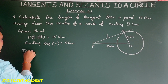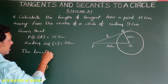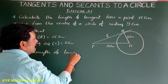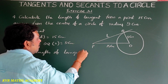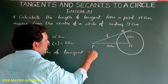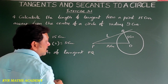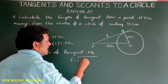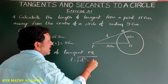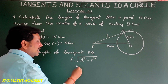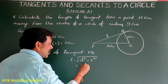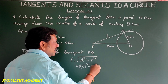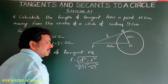The length of tangent PQ: L is equal to root of D squared minus R squared, where D is 15 and R is 9. So L equals root of 15 squared minus 9 squared.